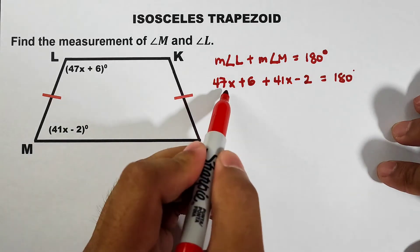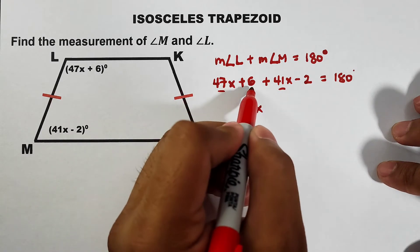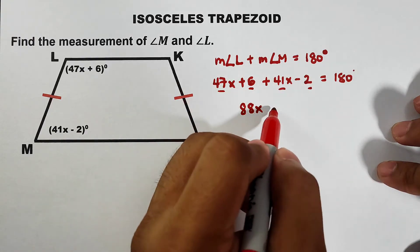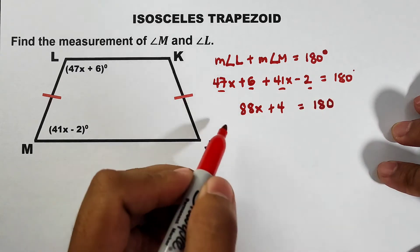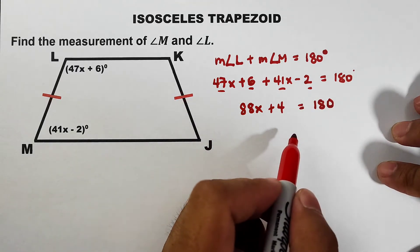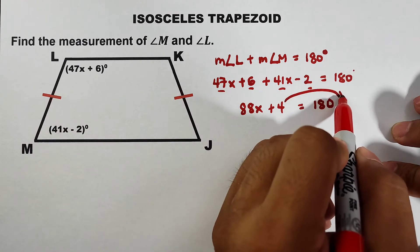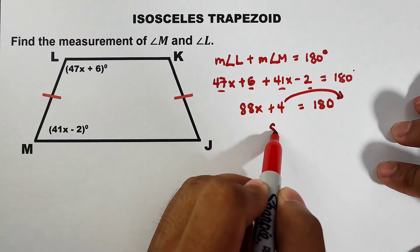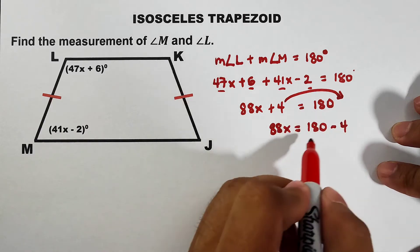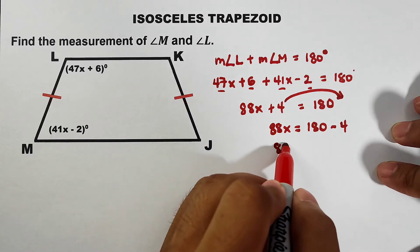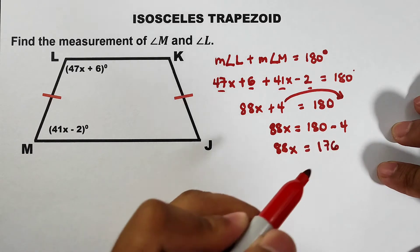Angle M can be replaced by 41x minus 2, which is equal to 180. Combining like terms: 47x and 41x give 88x, and 6 and negative 2 give plus 4, equal to 180. To solve this equation, let us transpose: 88x equals 180 minus 4. Simplify: 88x equals 176.